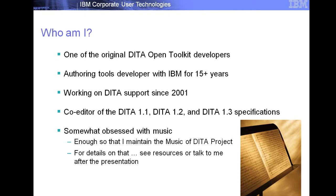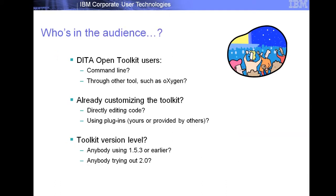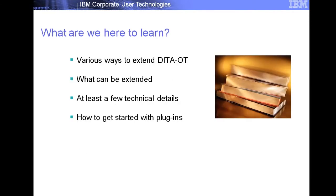I've been working on the toolkit since it started. Working on authoring tools with IBM for 15 years, almost all of that with DITA, and work on the spec as well. Most of you probably do it through some other tool like Oxygen. What we're here to learn: ways to extend the OT, how to do it, how not to do it, and how to get started with plugins if you're not already.